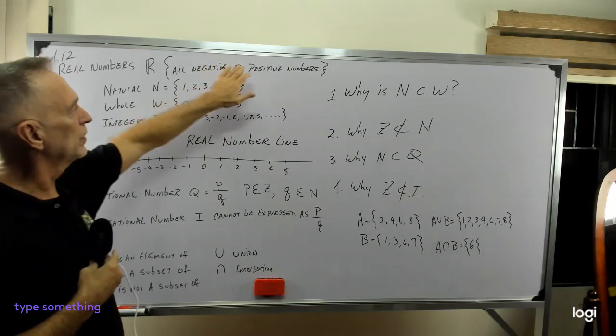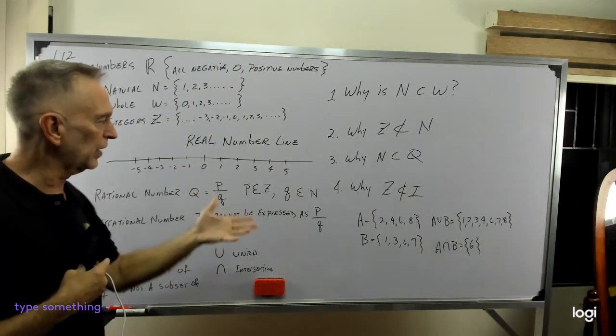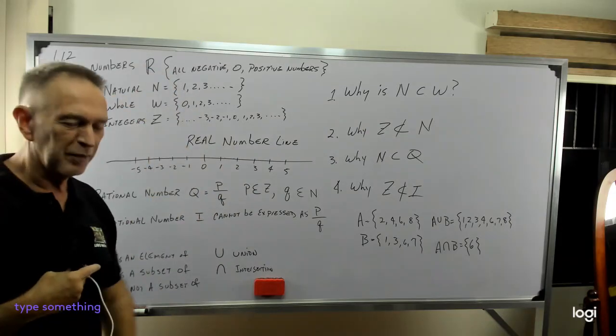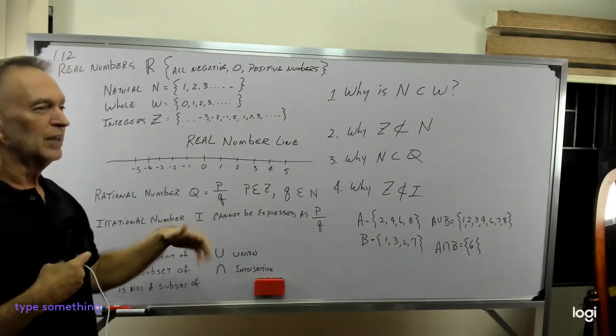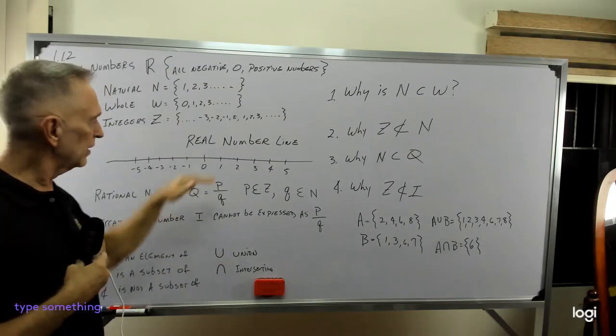And that's all negative, zero, and positive numbers. So any number you can think of, square root of a billion, it's in there. Number negative five is in there. All of those are there, including zero.